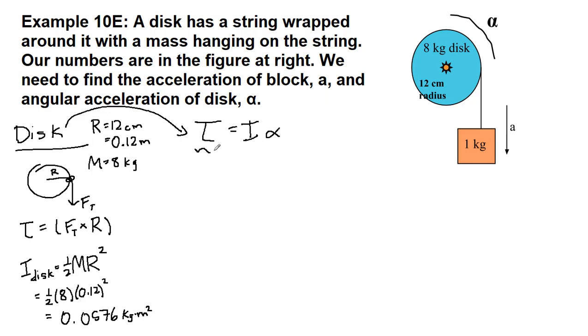So plugging in what we have so far, this torque on the left is our unknown tension times 0.12, and the moment of inertia on the right side is 0.0576, and that's times our unknown alpha.